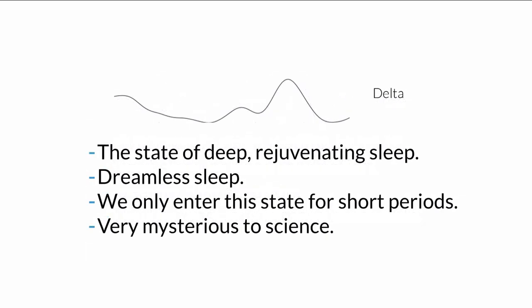Delta brainwaves are associated with deep, restful, and dreamless sleep. We only enter this state for a short period each night, and it remains very mysterious to Western science. As for meditation, I think what meditation does is it improves your sleep. Part of what it does is it increases the amount of time you spend at night in this delta state, simply because you have less to impede you from getting into that state — less stress, less agitation, less tension in your body that would prevent you from reaching this really deep state for a long period of time.